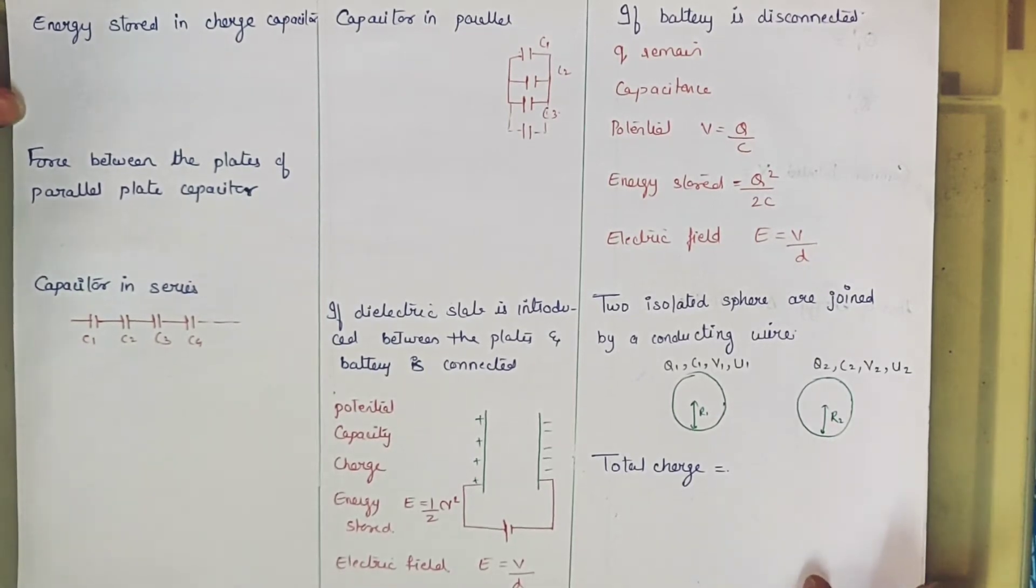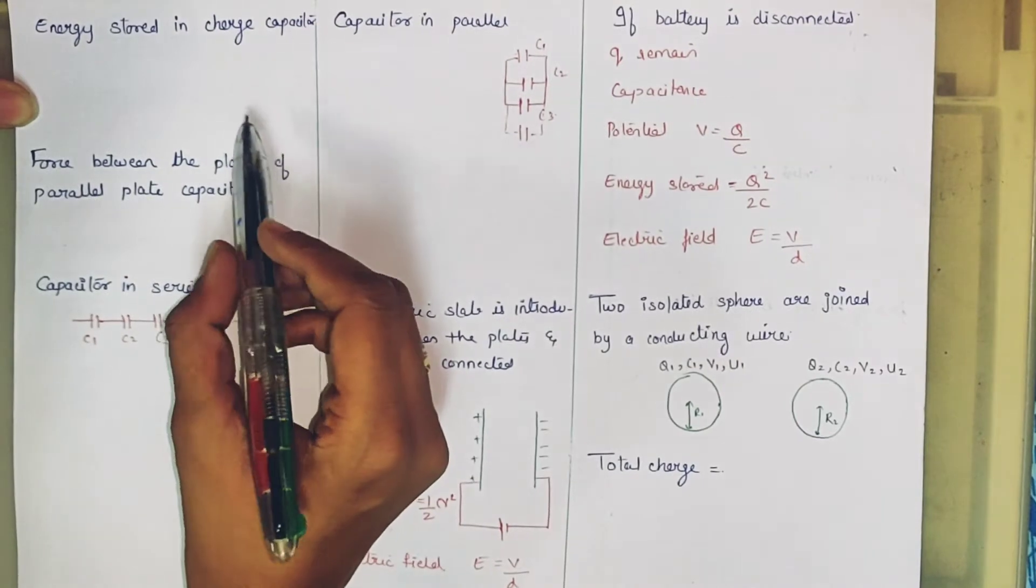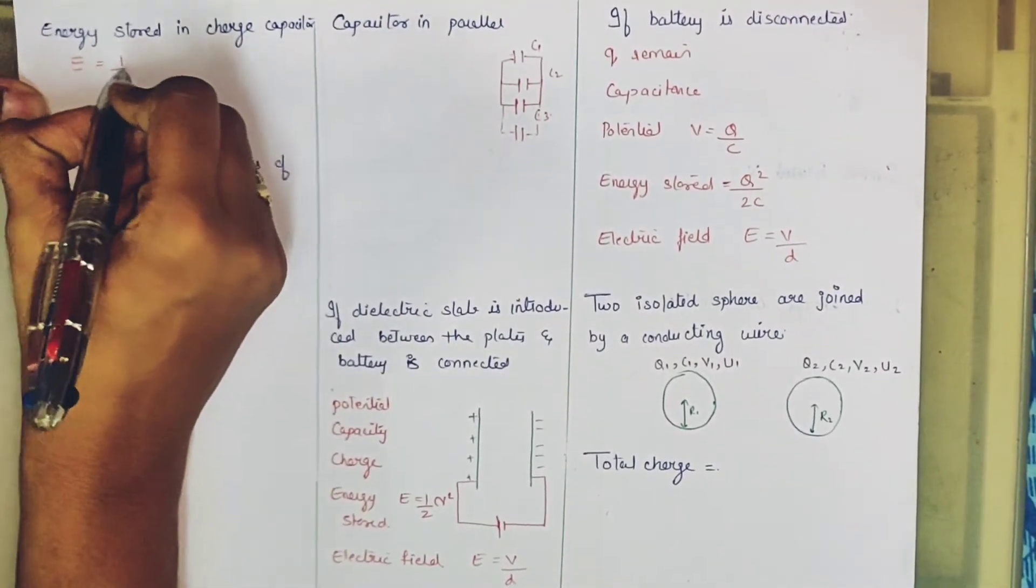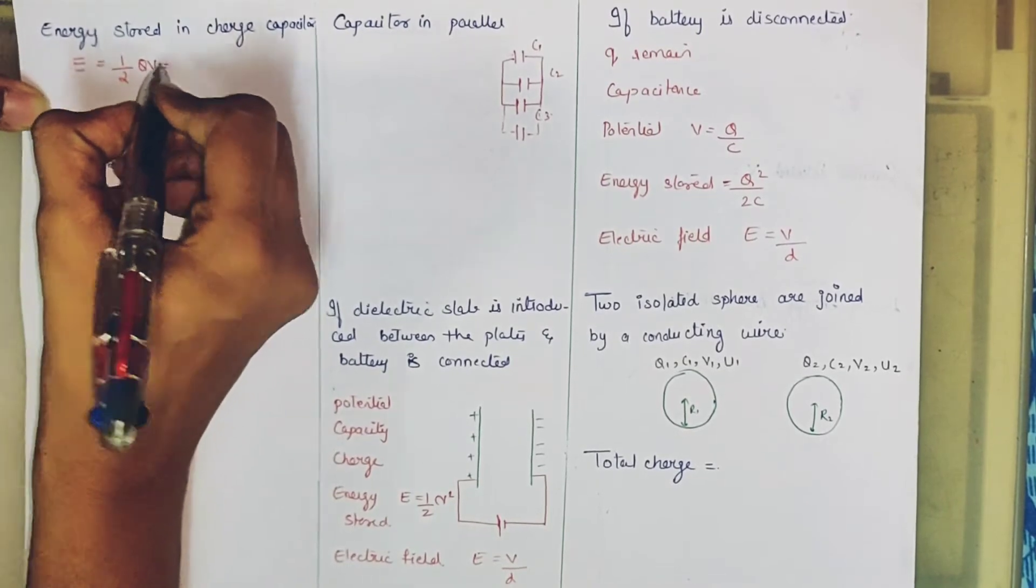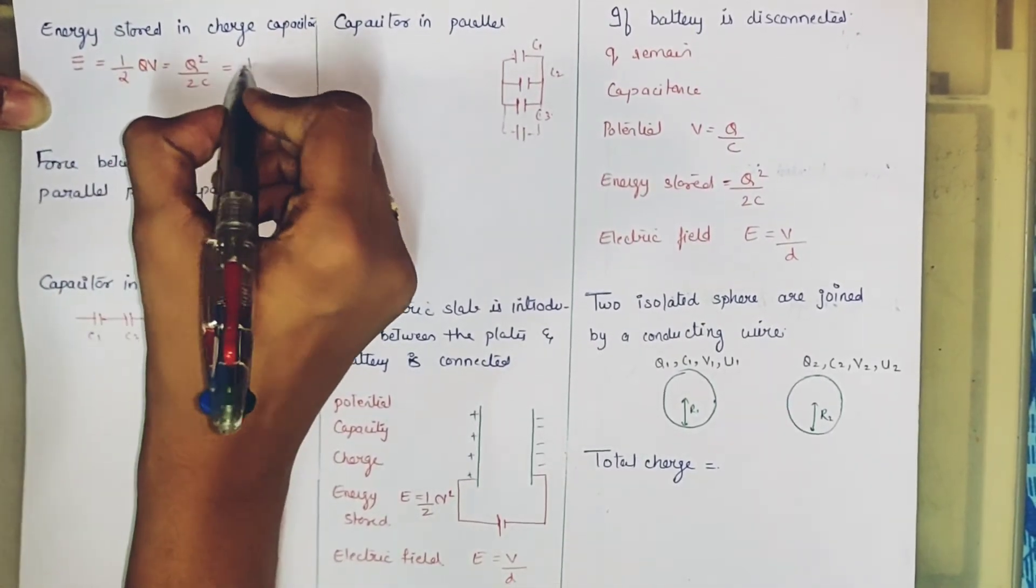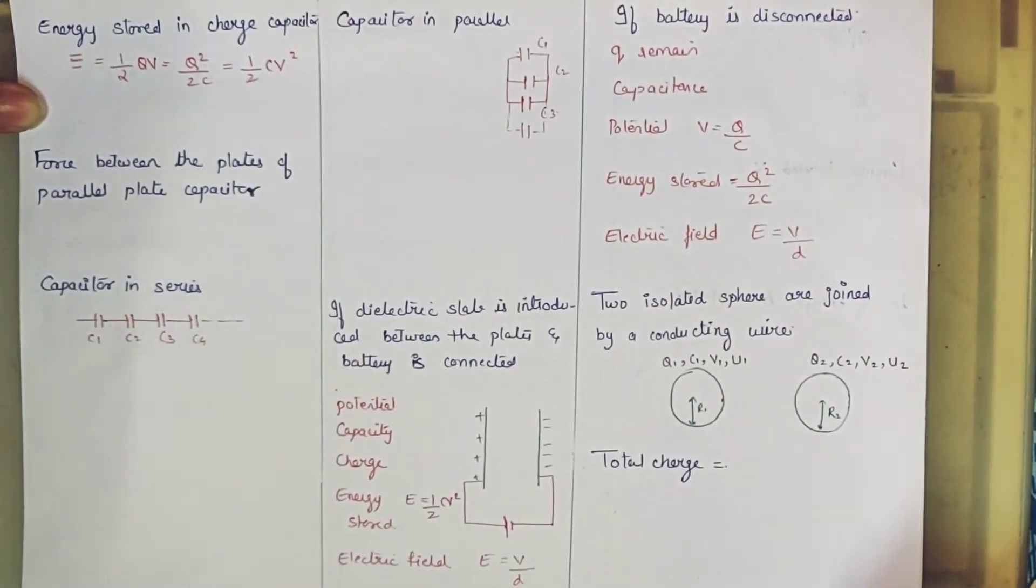Next, we have studied the capacitor last time. Now we are continuing. How much energy is stored in the capacitor? The formula is E equals half QV. Next is Q square by 2C, and third is half CV square. So these are the three formulas of energy.